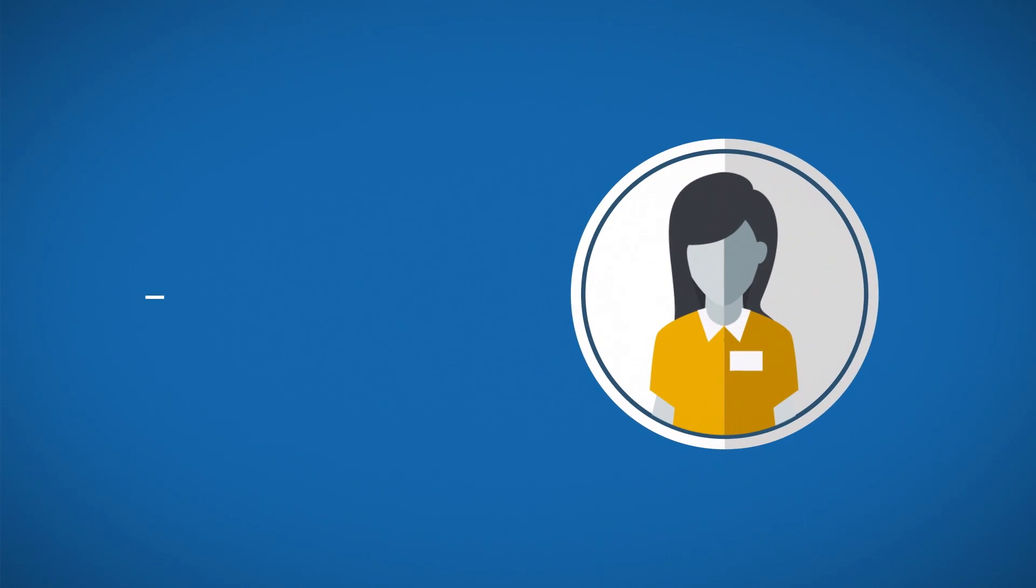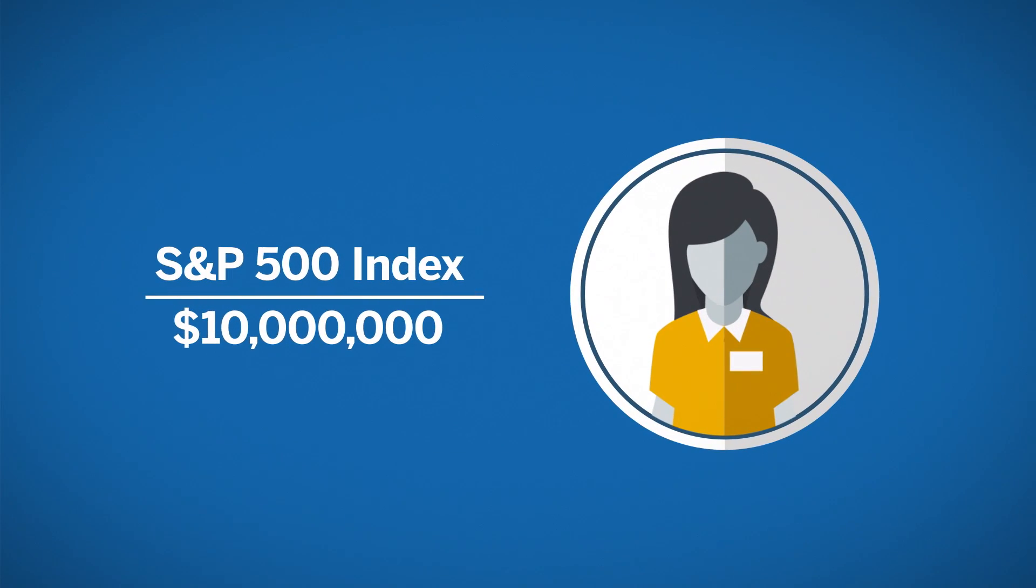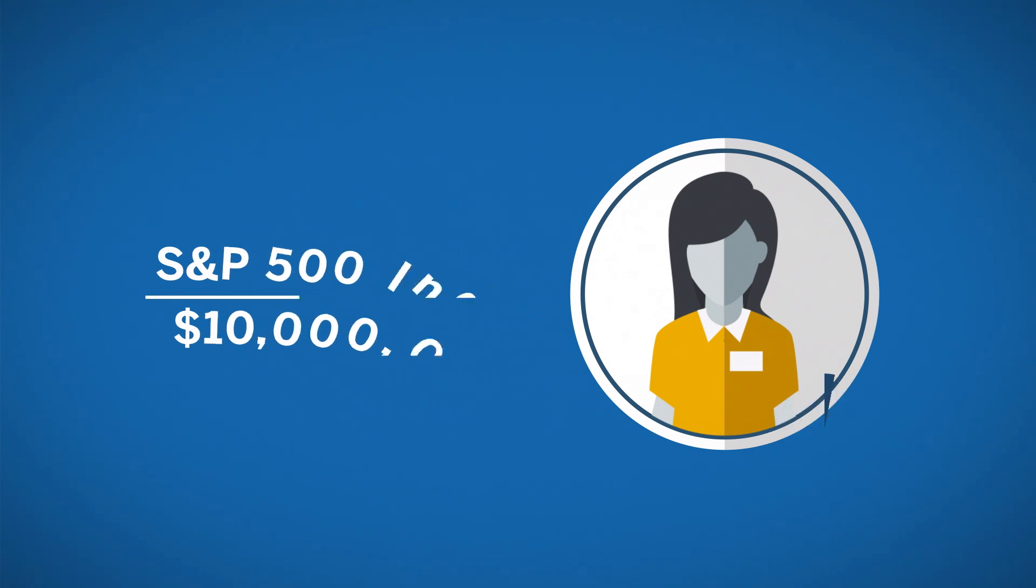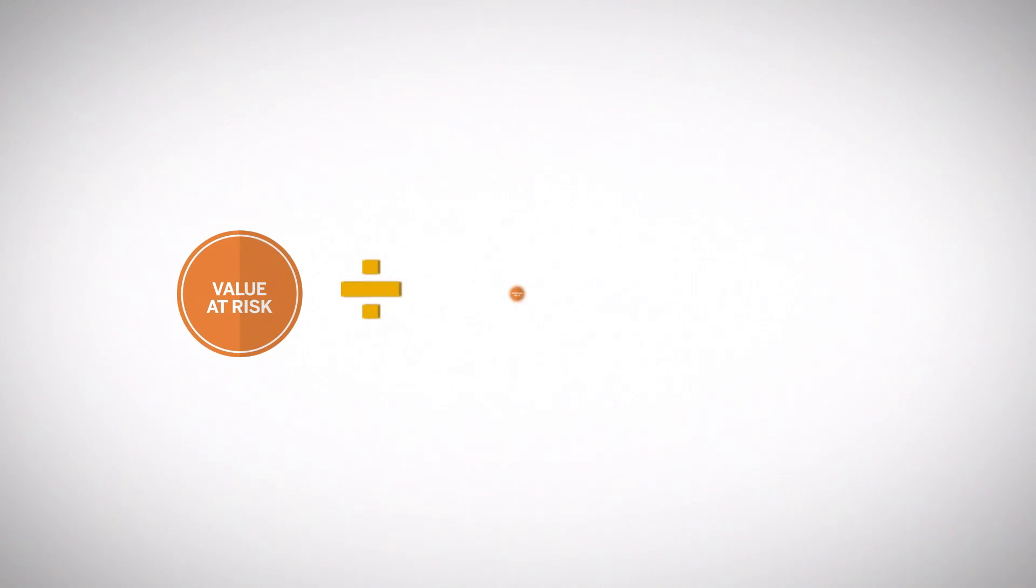Now consider a portfolio manager with a $10 million S&P 500 index risk position. Suppose she wants to reduce her exposure to the S&P 500 index by 10%. She could utilize e-mini S&P 500 futures by selling futures in a ratio based on the notional value of the futures contract. To build this hedging ratio, you take the value at risk and divide it by the notional value of a futures contract.